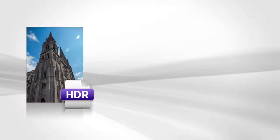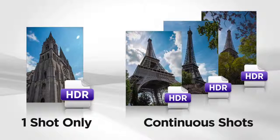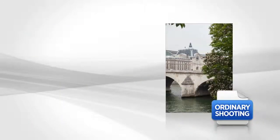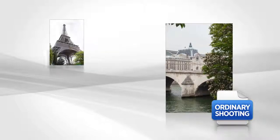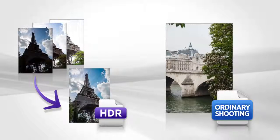The Continuous HDR option lets you choose whether to shoot one composited HDR image or continue to shoot a series of additional HDR images. The camera default setting is one final HDR image only. In this setting, the camera reverts back to ordinary shooting after three quick bracketed shots are taken and one finished HDR image is recorded.